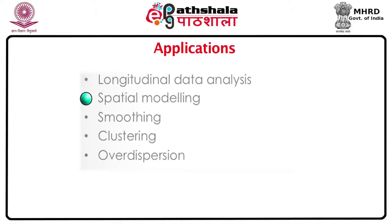The second application area is spatial modelling. Here we can look at some binary phenomenon, such as the presence or absence of a particular mineral over spatial locations. The correlation arises from the fact that locations closer to each other will tend to be correlated, while locations further apart will be less correlated. It can be shown that a random effect in the mixed model can account for this correlation. Similarly, smoothing is the same as spatial modelling but along one direction only — fitting a GLMM can achieve smoothing, and the variance of the mixed model turns out to be the smoothing parameter.